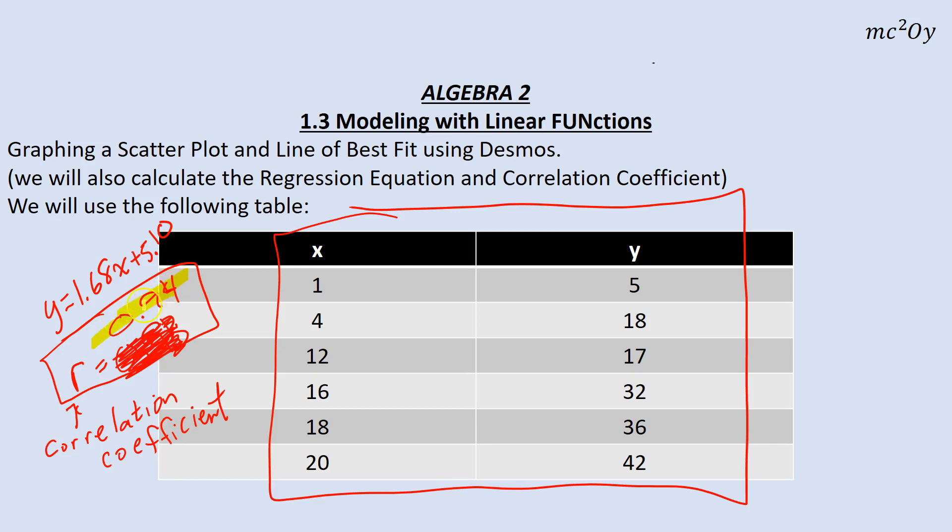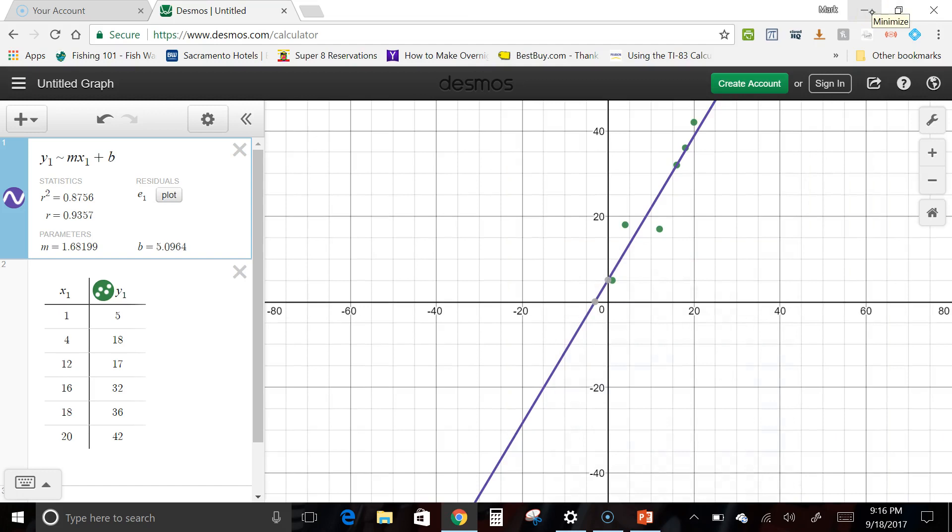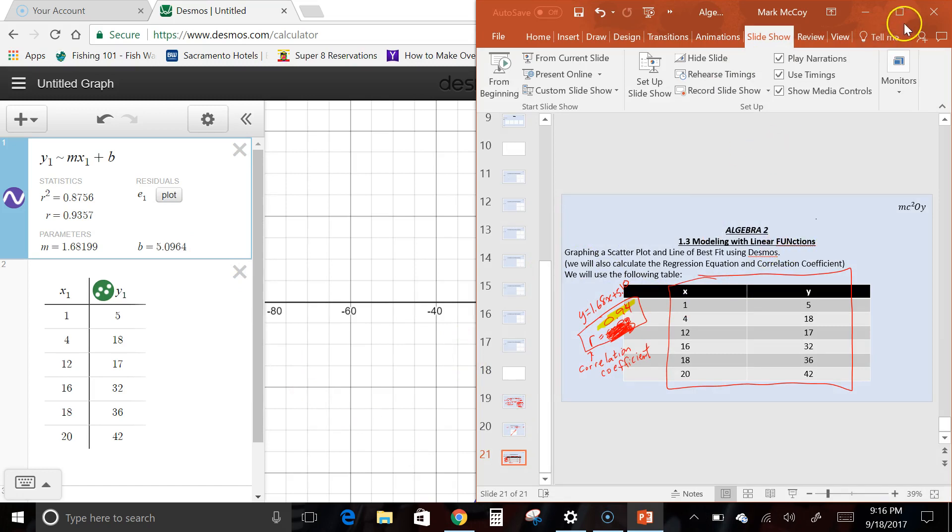You want a correlation coefficient that's approaching 1 or negative 1, because that means you have a really good regression equation. Your line matches up these points really well. Notice this line hits 1, 2, 3 of our points, and almost splits those two in half. That's why it's so close to 1. We have that value right there. That's where that 0.94, that's pretty darn good. There's a lot of other cool things you can do with this, but that's all we're going to do. That is dealing with modeling with linear functions and using Desmos for it.